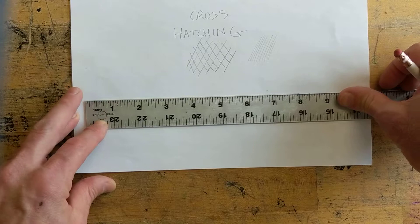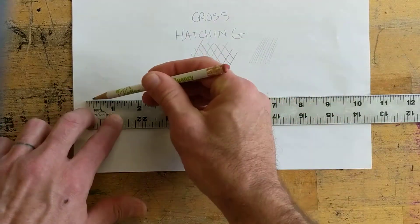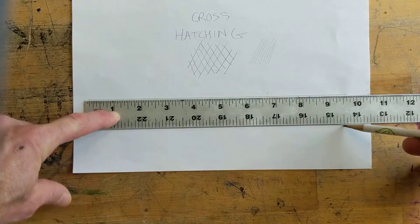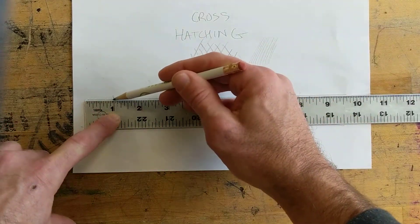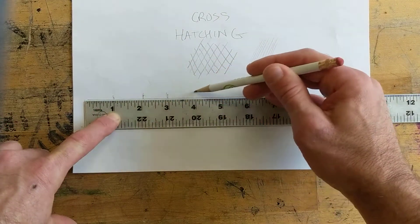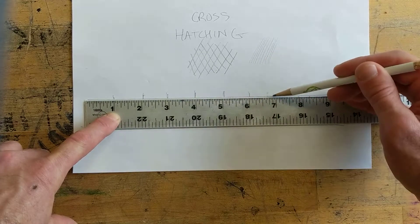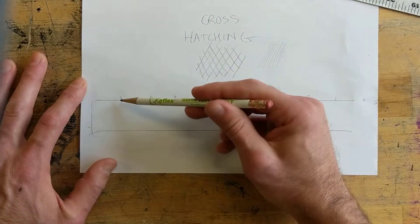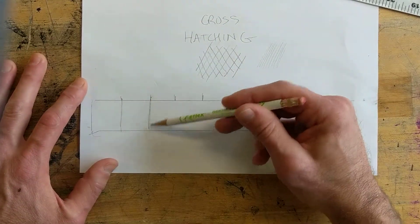So we're going to create a value scale, so in your sketchbook just trace your ruler. Okay, and mark off the inches, and then go ahead and you can just sketch in the boxes.